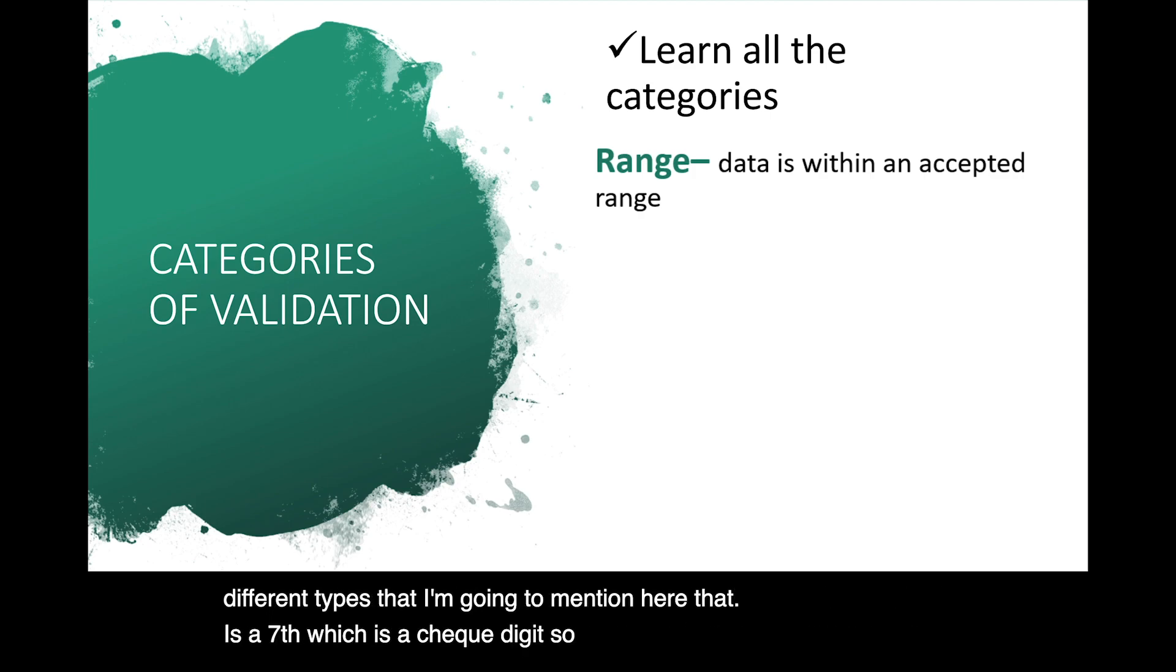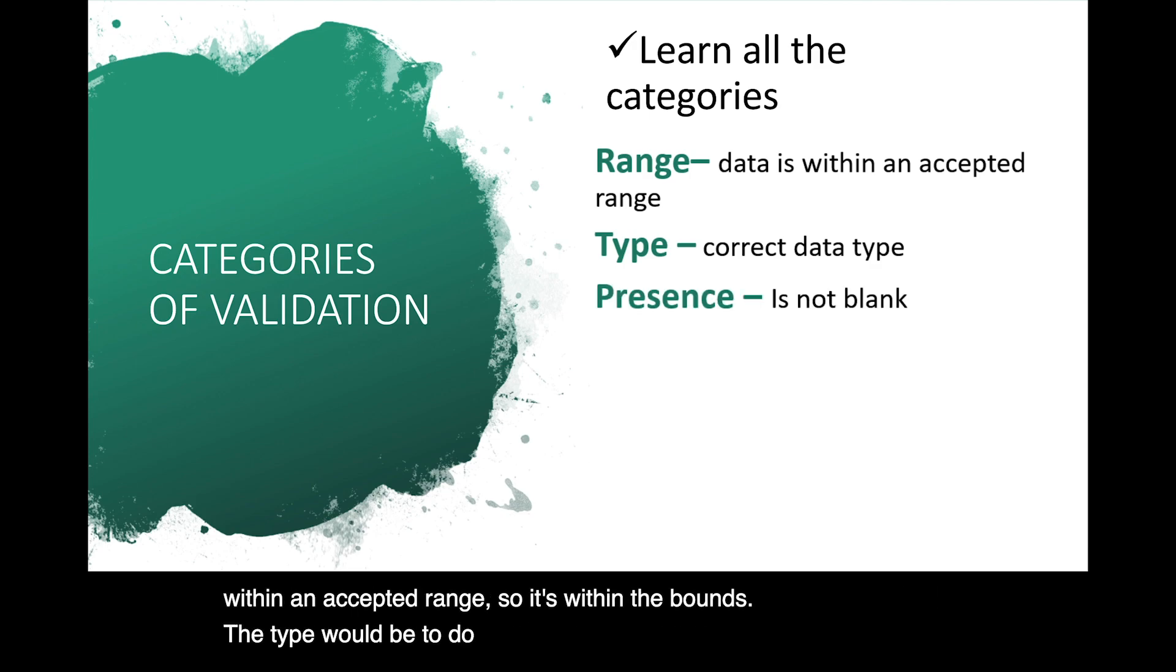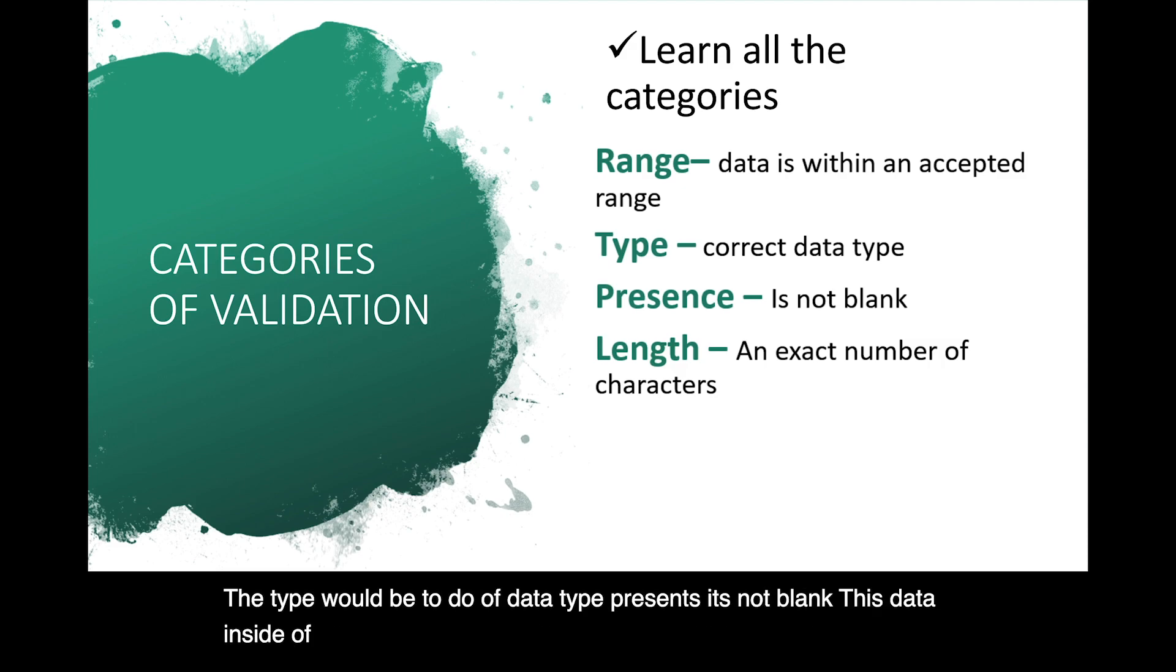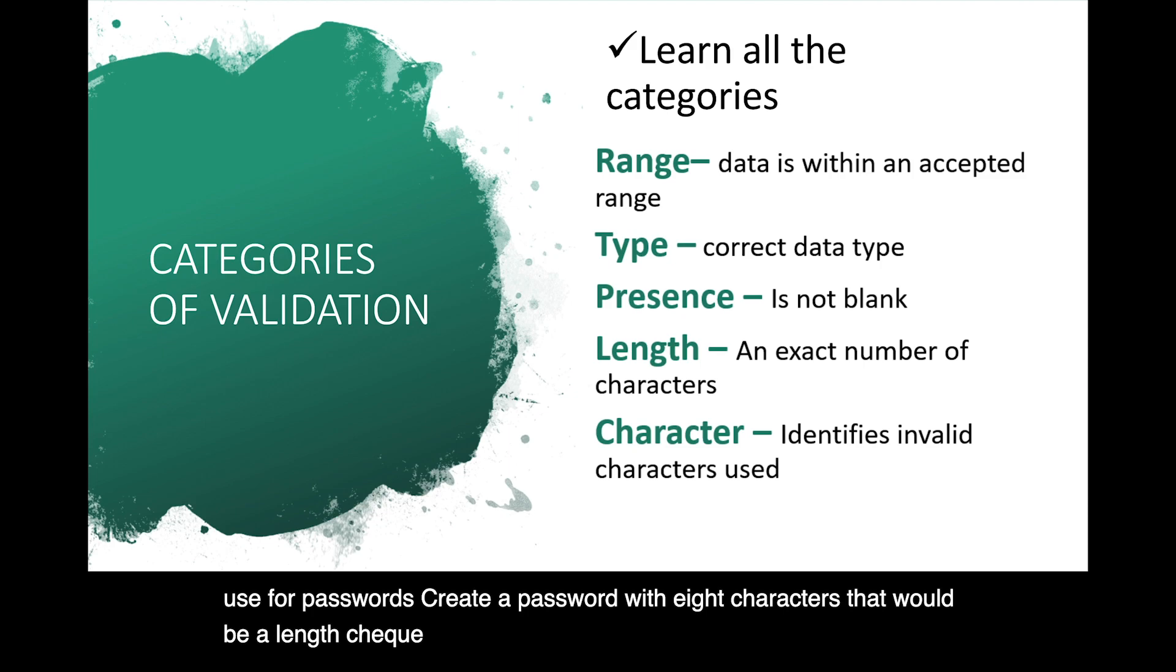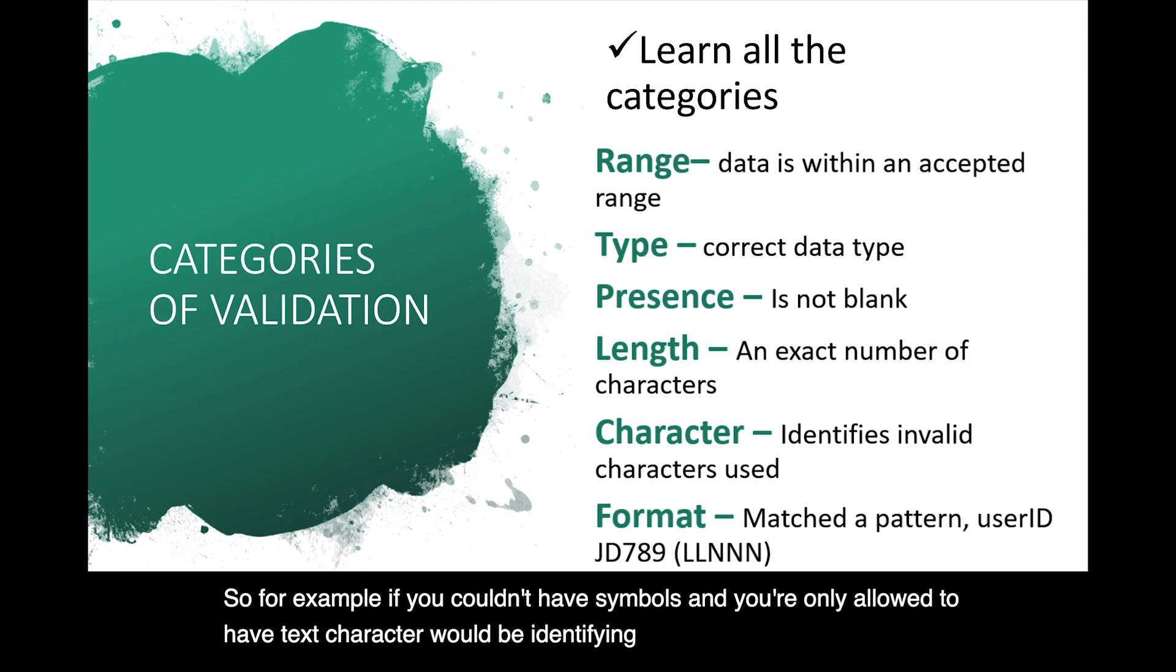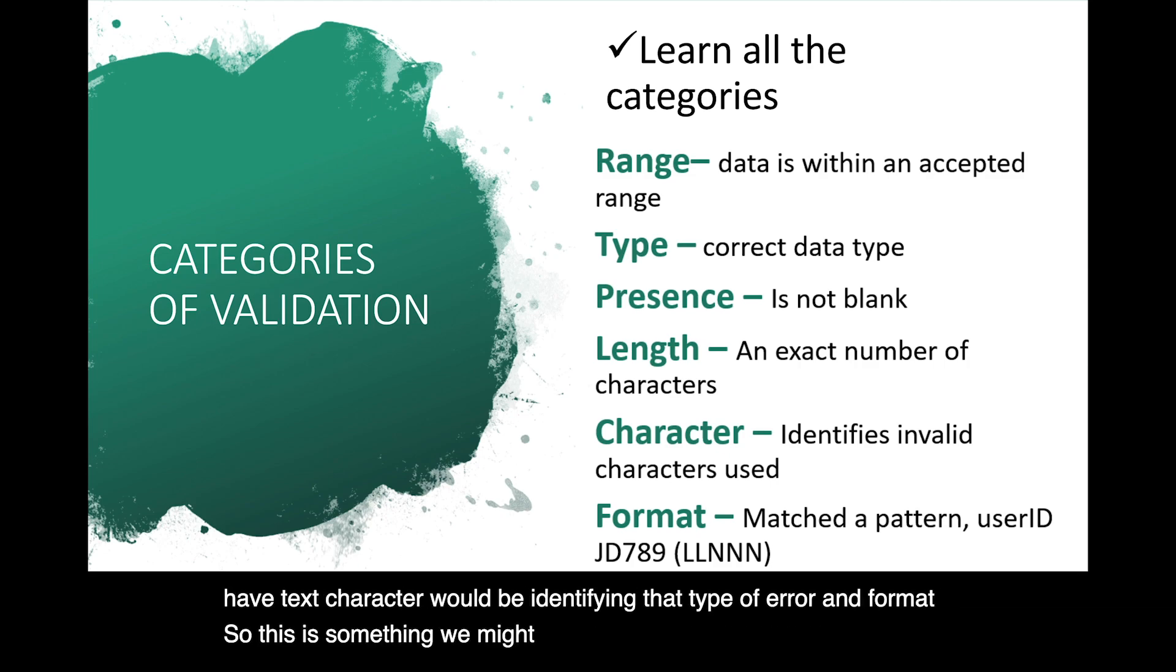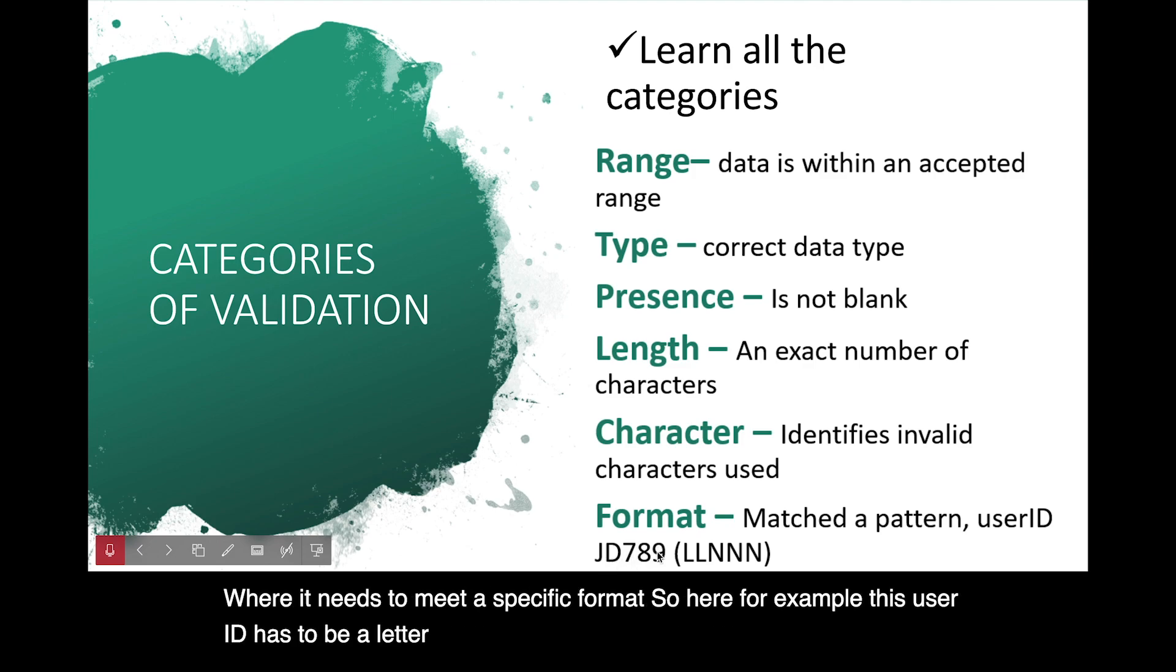So there are six different types that I'm going to mention here. So the range would be any data that is within an accepted range. So it's within the bounds. The type would be to do a data type. Presence, it's not blank. There's data inside of it. Length, that's to do with character length, something you might use for passwords. Create a password with eight characters. That would be a length check. Character identifies if an invalid character is used. So for example, if you couldn't have symbols, and you're only allowed to have text, character would be identifying that type of error. And format, so this is something we might use for like an identification, a postcode, something like that, where it needs to meet a specific format. So here, for example, this user ID has to be a letter, a letter, a number, a number, a number.